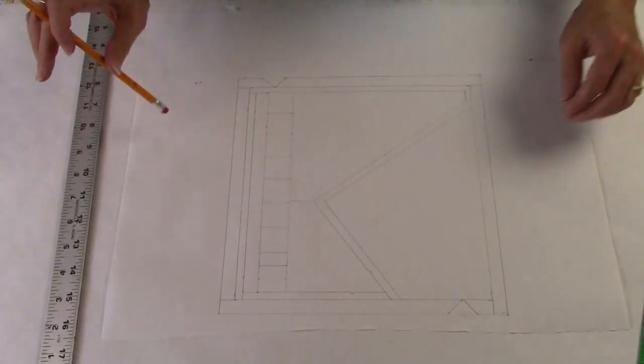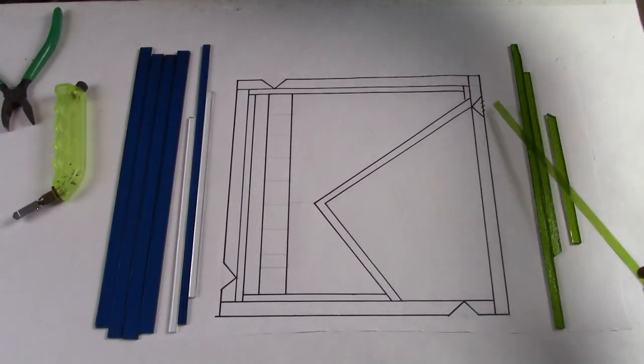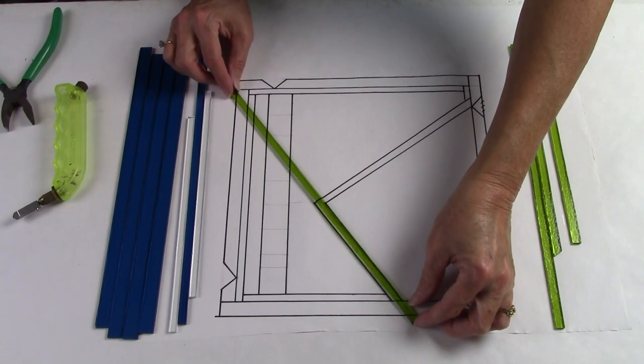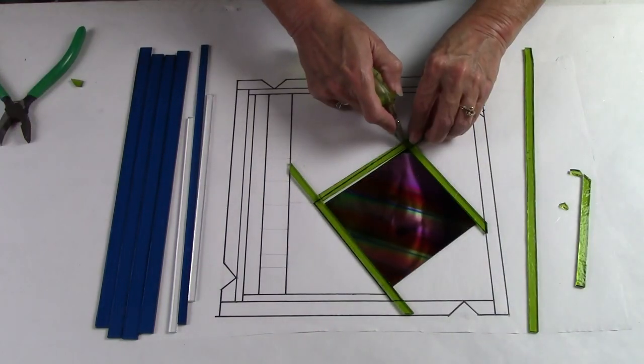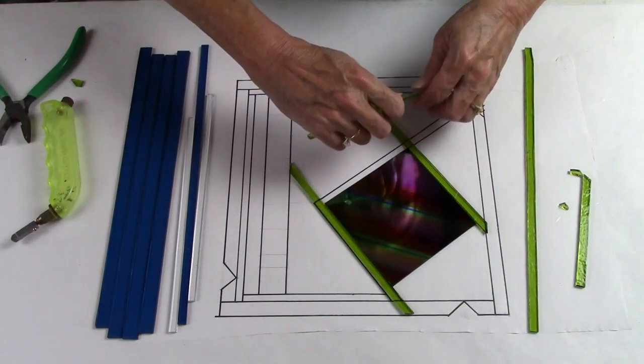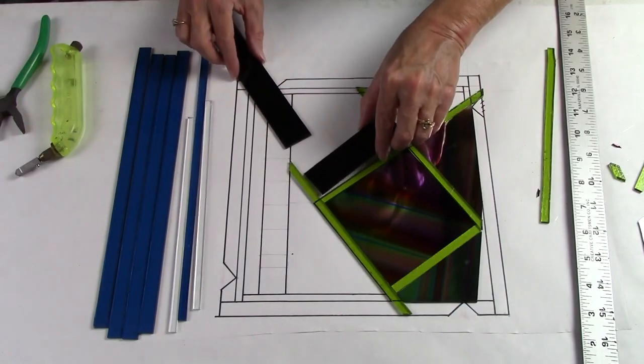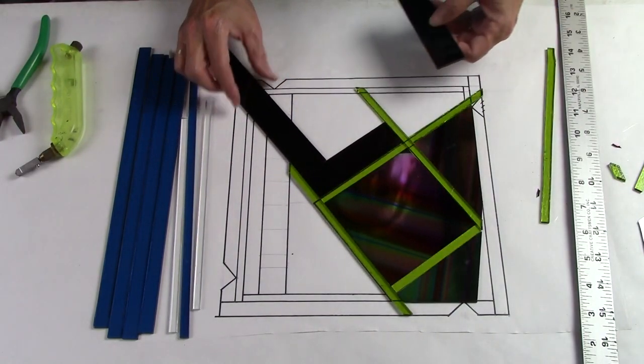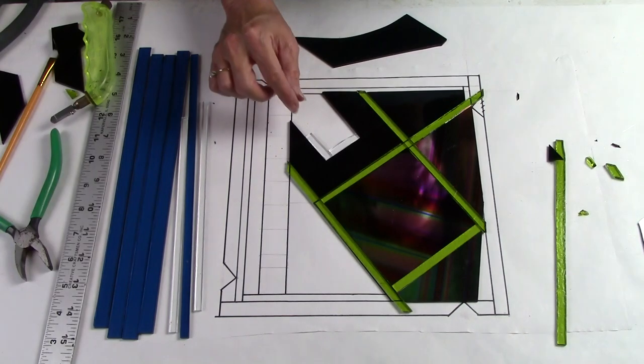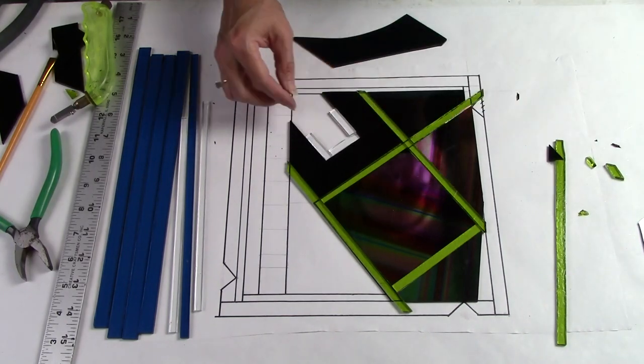Now I'm going to start introducing some color and see where I might like to have more design details. I went over my pencil lines with a black marker. This makes it easier to cut the glass over the top of the pattern and make sure that my pieces are accurately cut.